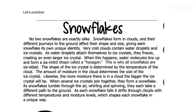Very cold clouds contain water droplets and ice crystals. As water droplets attach themselves to ice crystals, they freeze, creating an even larger ice crystal. When this happens, water molecules line up and form a six-sided shape called a hexagon. This is why all snowflakes are six-sided.